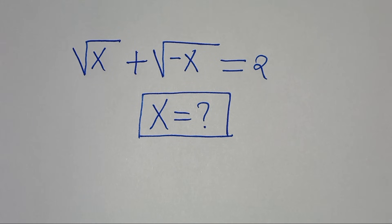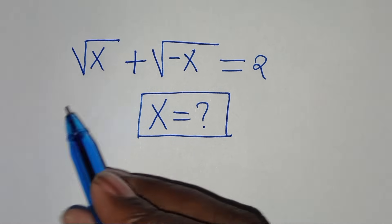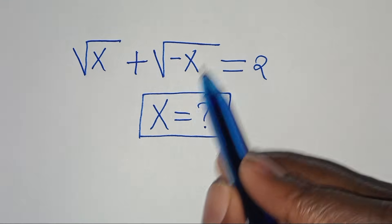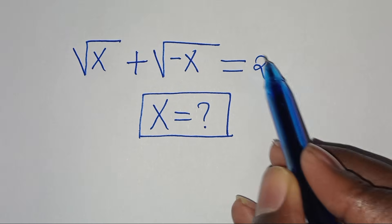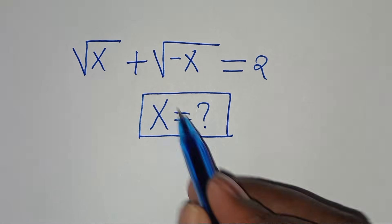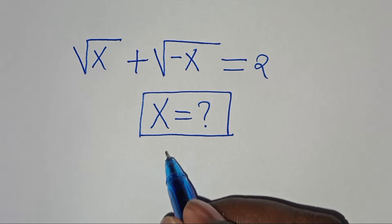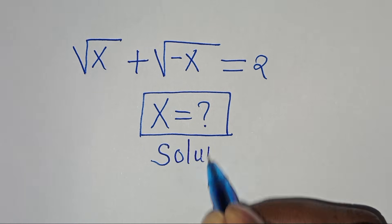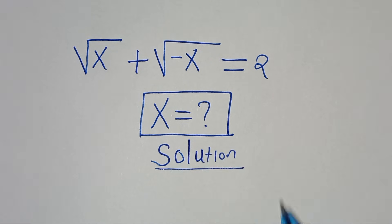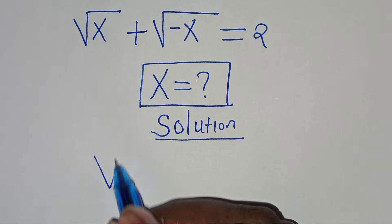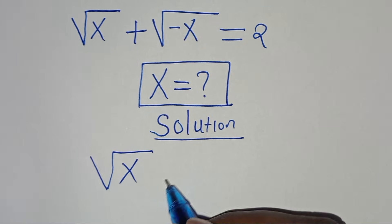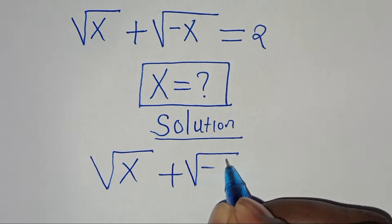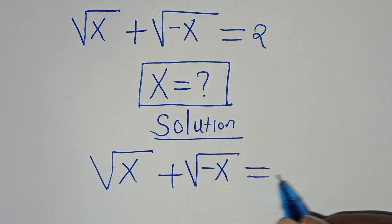Hello everyone, you are welcome to solve this nice algebra problem: the square root of x plus the square root of minus x is equal to 2. What are the values of x? Now let's provide a solution. We have the square root of x plus the square root of minus x, this is equal to 2.